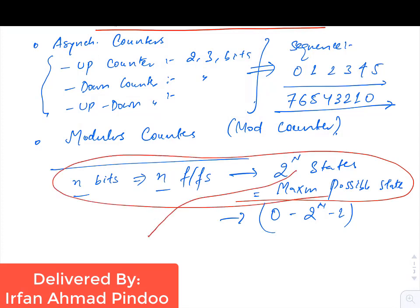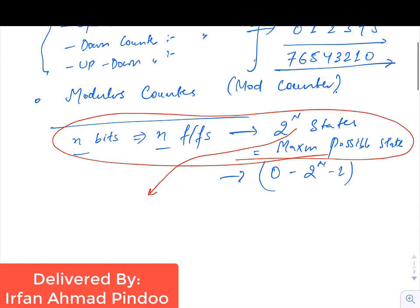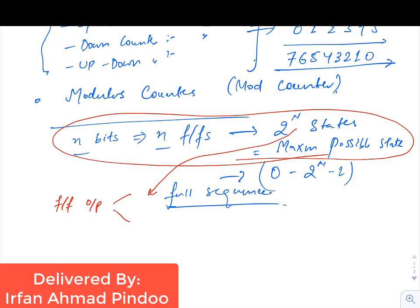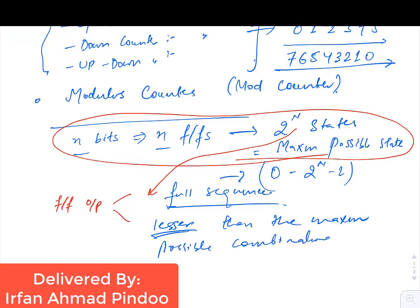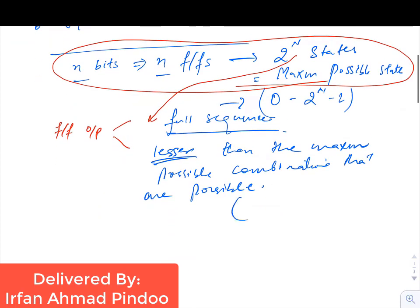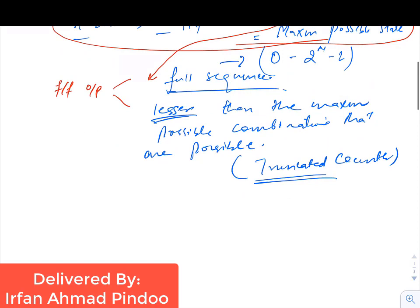The maximum number possible would be 2 to the power n minus 1. If flip-flop output is producing all the states, such a counter produces all maximum sequences at the output. But there is one more category of counter in asynchronous counters where outputs are lesser than the maximum possible combinations — such a counter is called a truncated counter.